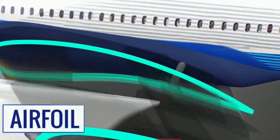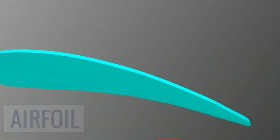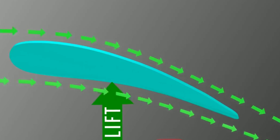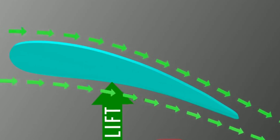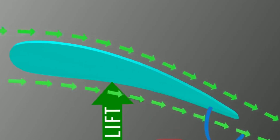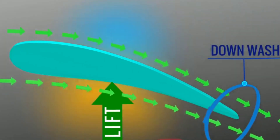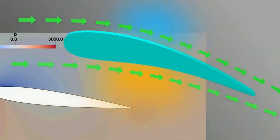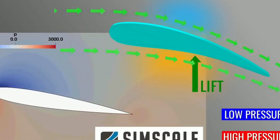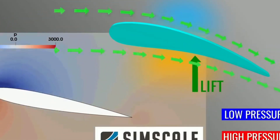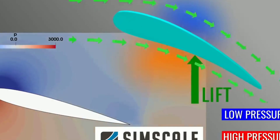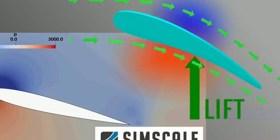The wings are airfoils that generate lift when moved rapidly through air. The wing configuration comes in different shapes and angles, and that depends on the amount of lift that needs to be generated, the stability, the operating speed, and the balance. All these factors change the aircraft wing shape.